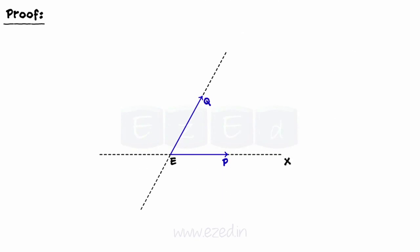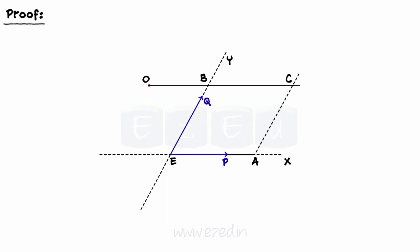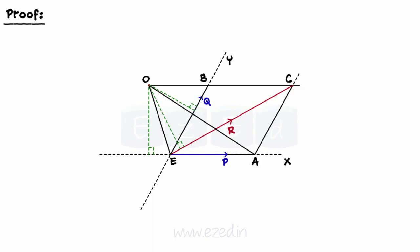Let's prove Varagnon's theorem. Let the forces P and Q act along the lines EX and EY and intersect at E. Let O be any point in the plane of the forces. Through O, draw OB parallel to EX meeting EY at B. Choose the scale so that EB represents Q. On the same scale, cut off EA on EX to represent P. Draw a line parallel to EB from point A and let it cut line OB at point C. Complete the parallelogram EACB. Then EC represents R, the resultant of P and Q. Join OE and OA. Also, construct perpendiculars from point O on the lines EY, EX, and EC, calling them 001, 002, and 003 respectively.